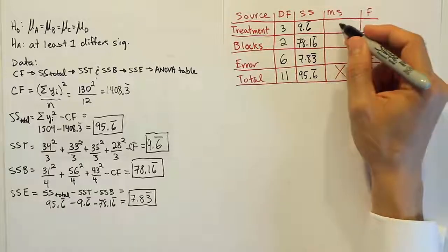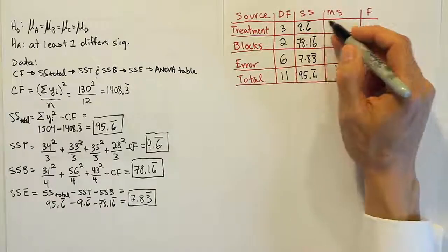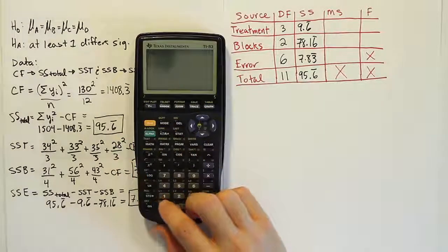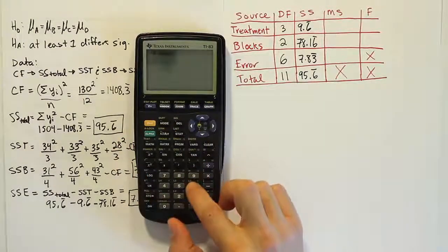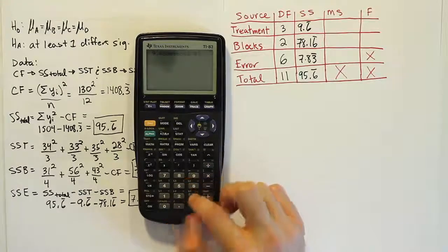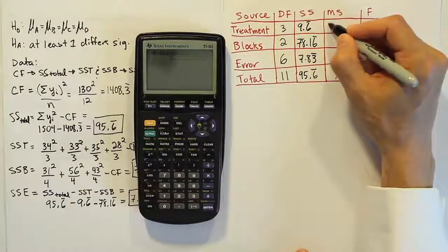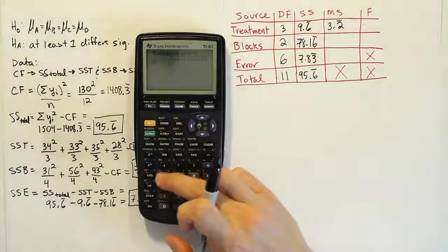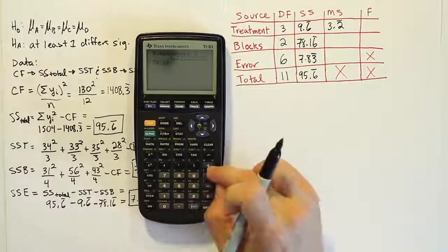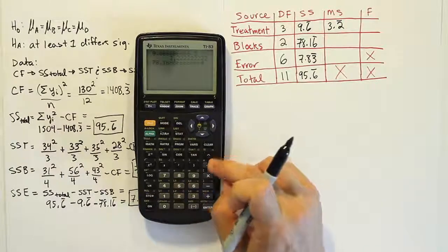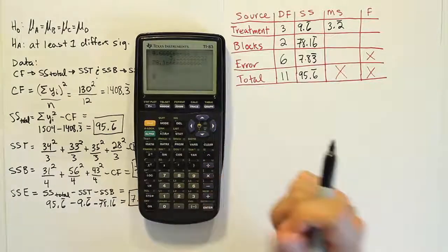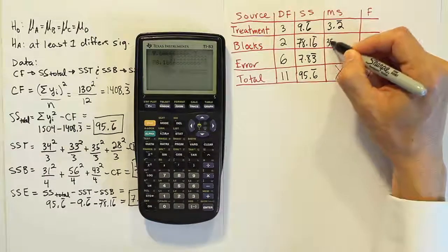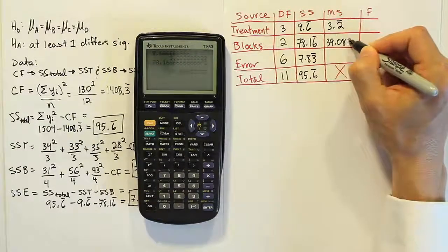Now, from there, the mean square is just dividing 3 into that. So, 9.6 repeating divided by 3, and we get our 3.22222. So, 3.2 repeating. And then we'll have 78.16 repeating, divide by 2. And of course, you get 39.083 repeating.